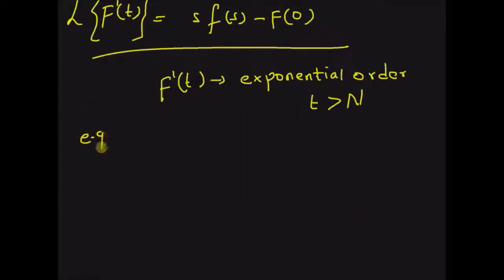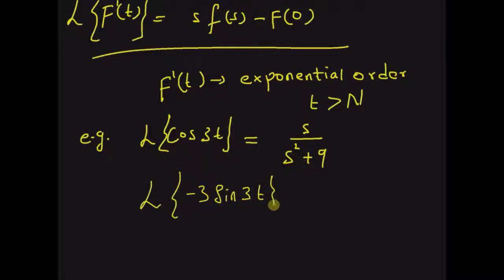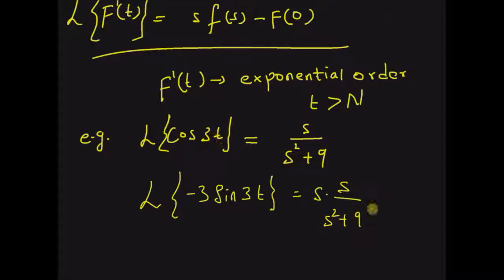Now, let us look at an example illustrating this property. We know that the Laplace transform of cos(3t) is equal to s/(s² + 9). We want to find the Laplace transform of its derivative, that is the Laplace transform of −3·sin(3t), which is the derivative of cos(3t). By using the formula for the Laplace transform of the derivative, this equals s times the Laplace transform of cos(3t), which is s/(s² + 9), minus the initial value of the original function, which is cos(0) = 1.